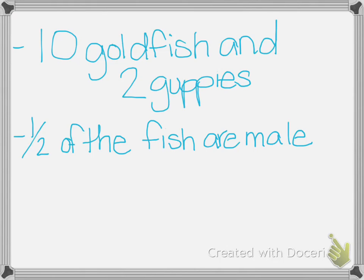And the last one says Josh has 10 goldfish and 2 guppies. Half of the fish are male. Write an expression that shows how many fish are female. So the first thing I need to do is find out how many fish there are, which means I need to add 10 plus 2. Since I do that first, we put parentheses around it. Half of them are male, which means the other half are female, which means we divide it by 2. Since it's only asking for the expression, you do not have to solve the problem.